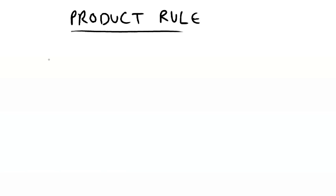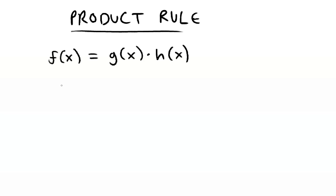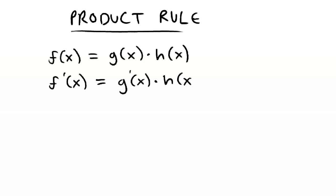Now the product rule. If the function of x is equal to some function g of x multiplied by some other function h of x, then f prime of x is g prime of x multiplied by h of x plus g of x multiplied by h prime of x.